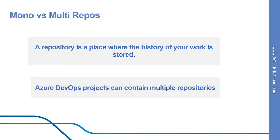First, let's understand mono versus multi repos. A repository is simply a place where the history of your work is stored. It often lives in a .git subdirectory of your working copy. So what's the best way to organize your code repository? Software development teams start with the best intention to keep clear separation of concerns in both the software being developed and their code repositories. However, over time, it is not uncommon for the code repositories to be bloated with unrelated code and artifacts.